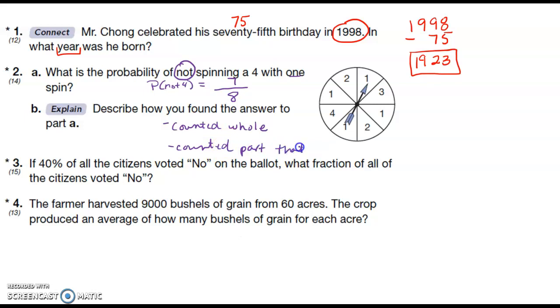Number three: If 40% of the citizens voted no on the ballot, what fraction of all of the citizens voted no? Oh fraction, they want you... I'm sorry, that threw me there for a minute. So 40% is 40 per hundred. And then they want me to reduce this, so the first thing I'm going to cancel the zeros so I have 4 and 10, and then I'm going to divide by two. I get 2/5, that is my answer, that's the fraction.